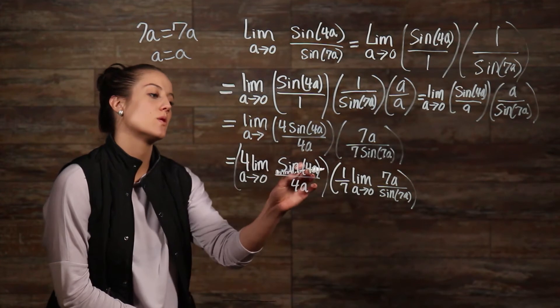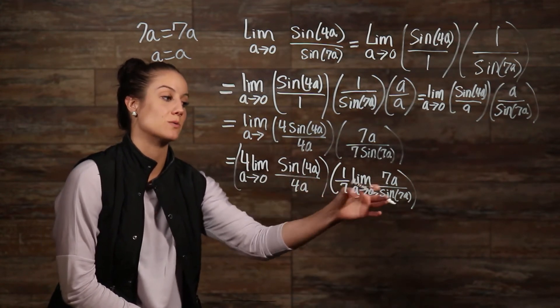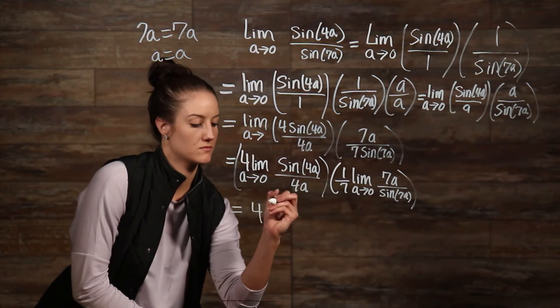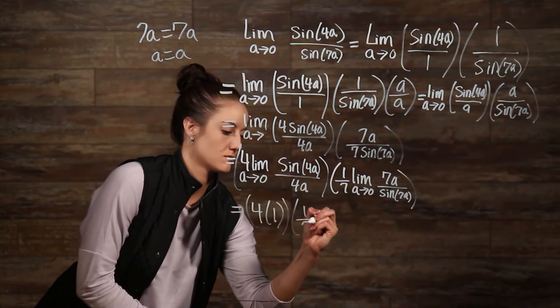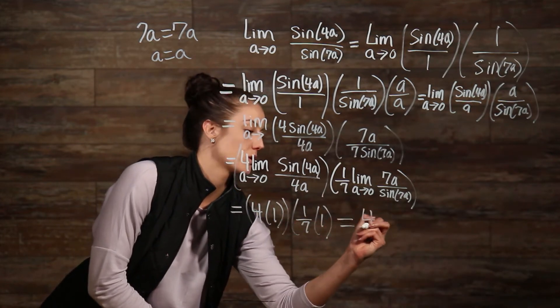Now that we have the same coefficient in front of our a's here, we know that both of these limits are equal to 1. So then we have... Let's take a look at one more before we move on to differentiation.